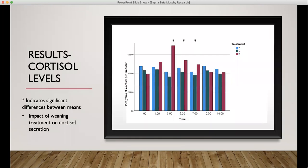Here is a graph that shows different cortisol levels. You can see where there are asterisks. This indicates days that there are significant differences between means between groups.